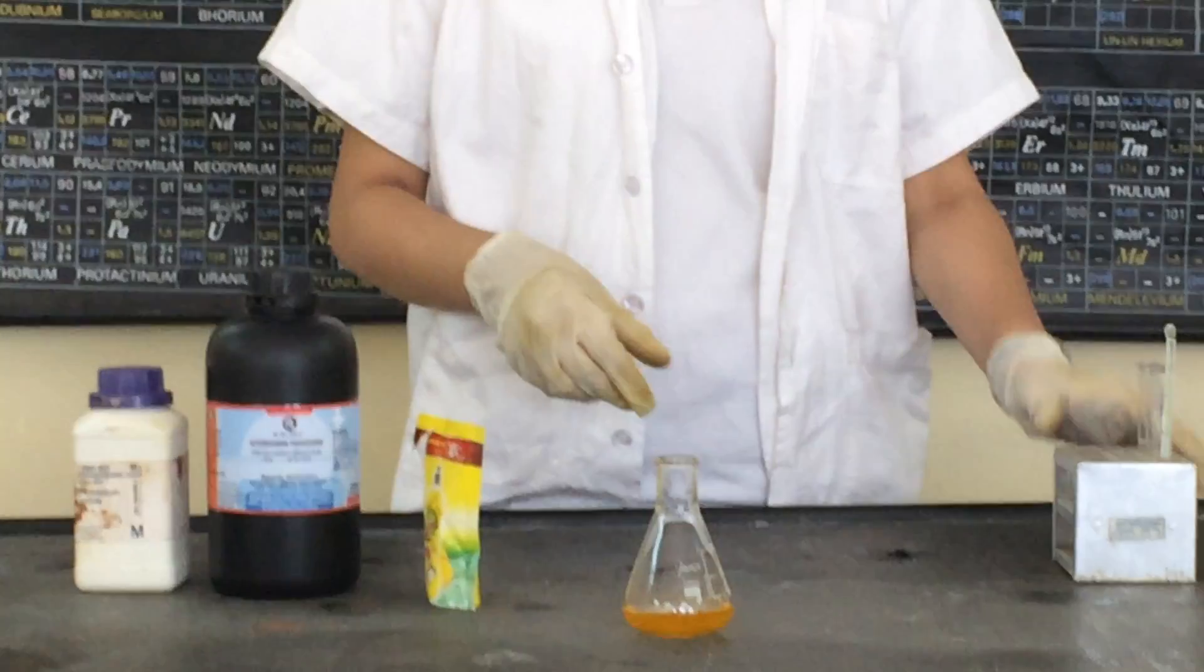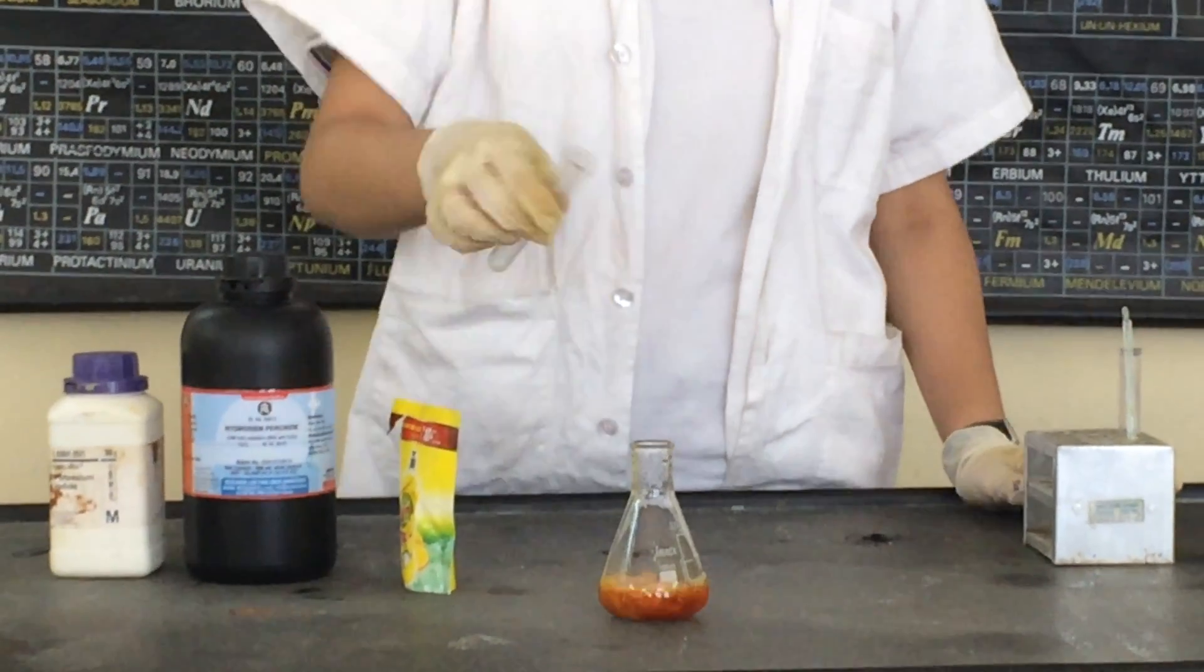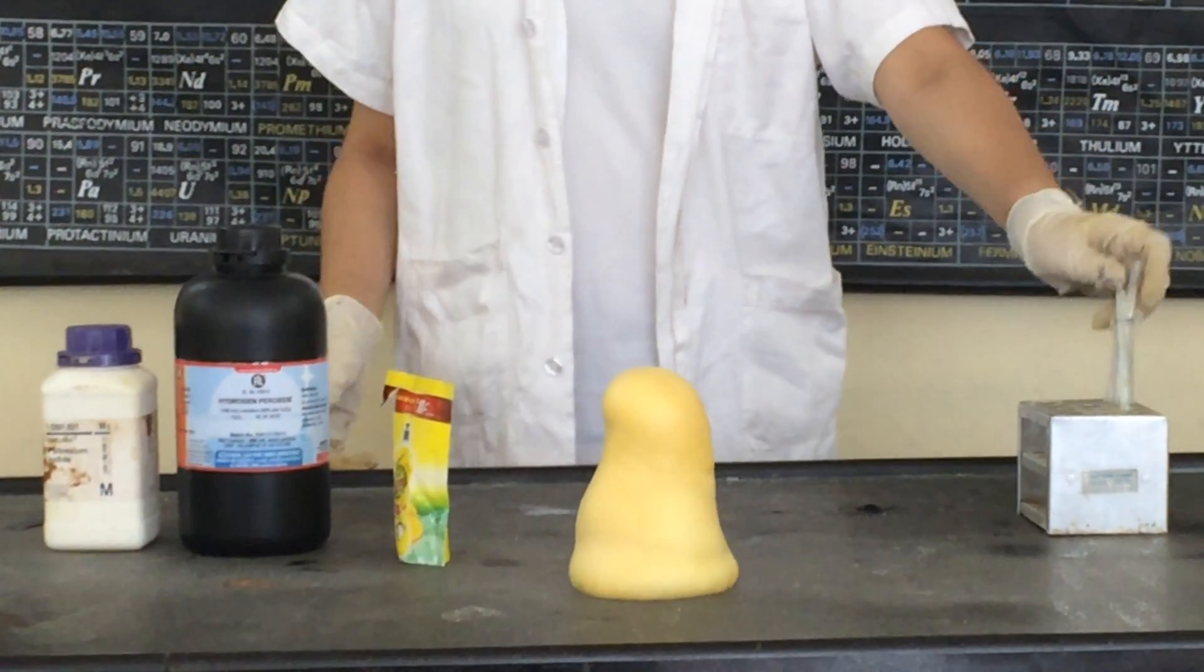So here is the final step that I will be taking. I will pour potassium iodide into H2O2 with the liquid dishwasher. And this is the result you will get.